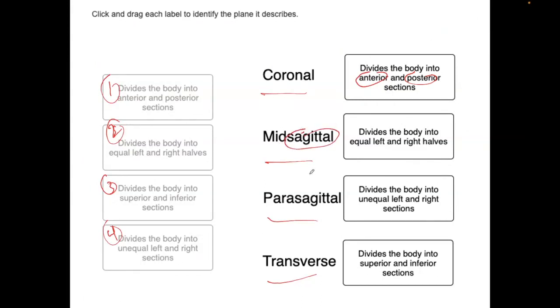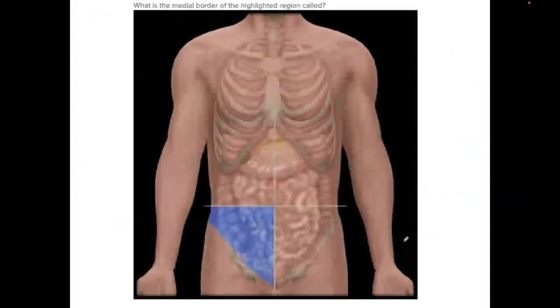Here's sagittal. But we said there's a mid-sagittal and a parasagittal. Mid-sagittal divides the body into an equal left and right half, where parasagittal divides the body into an unequal left and right half. And transverse divides the body into a superior and inferior section. Pretty straightforward.